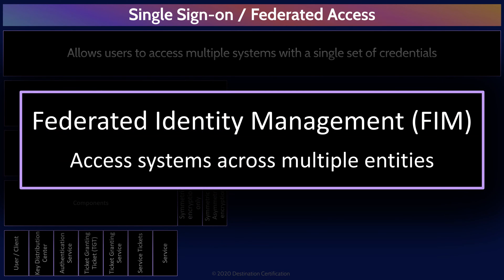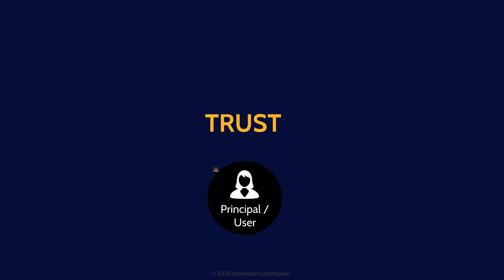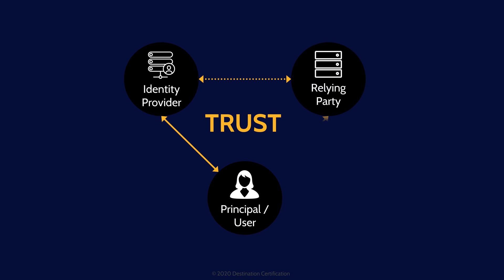Now let's talk about federated access. From a user perspective, it looks exactly like single sign-on — the user enters one set of credentials and they magically get access to a bunch of different applications. The key difference is that in federated access, users can gain access to not just internal applications but also externally managed applications — think access to software as a service applications in the cloud. Federated access relies on a trust relationship between three different entities: the user, the identity provider, and the service provider.